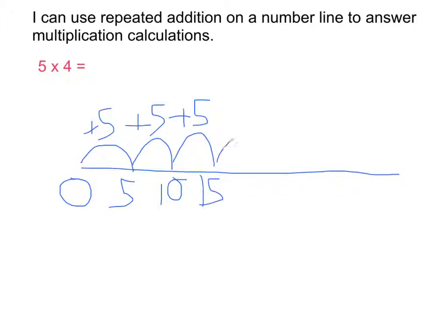And finally the fourth lot of 5, 15 add 5 is 20. And as you can see, the clear answer would be 20.